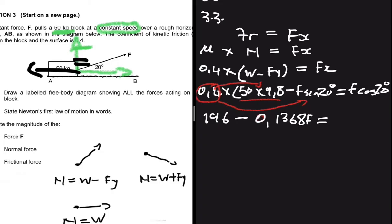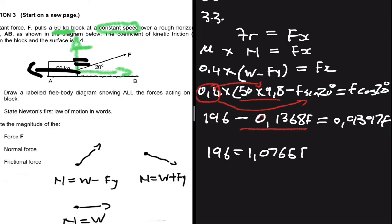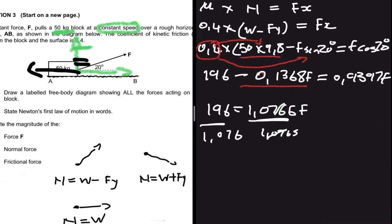Taking the 0.1368F term to the right-hand side, we get 196 = 0.9397F + 0.1368F = 1.0765F. Dividing both sides by 1.0765, we get F = 196 ÷ 1.0765 = 182.07 newtons.